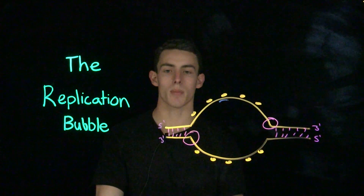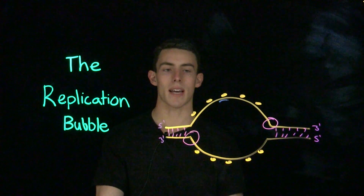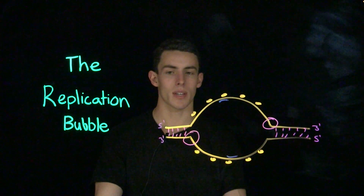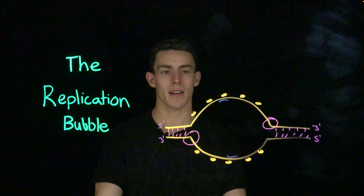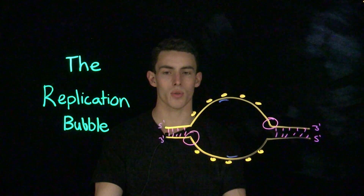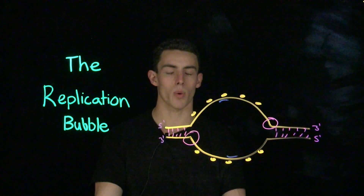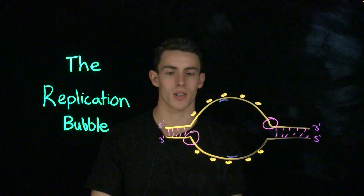A primer is a molecule of RNA that allows the enzymatic machinery to both overcome the lack of a free three prime hydroxyl group and also hold on to the growing strand as we start replication.